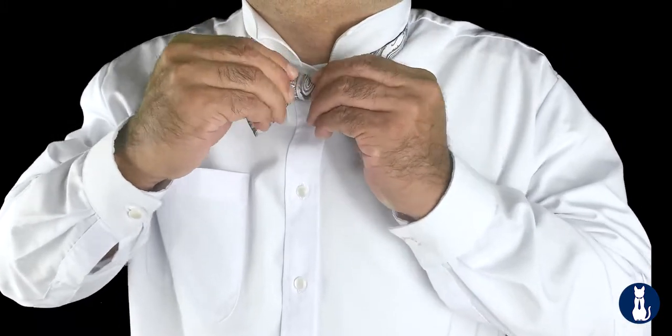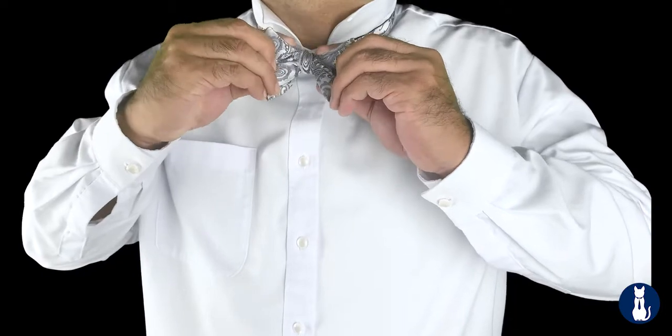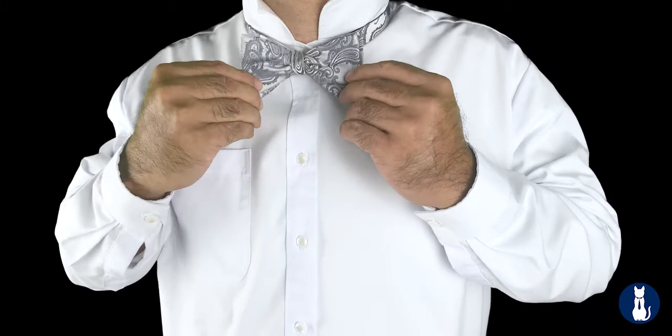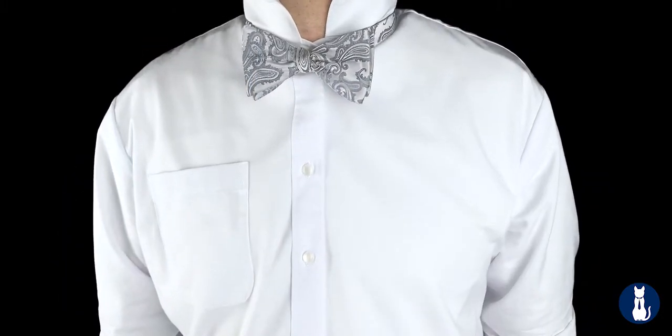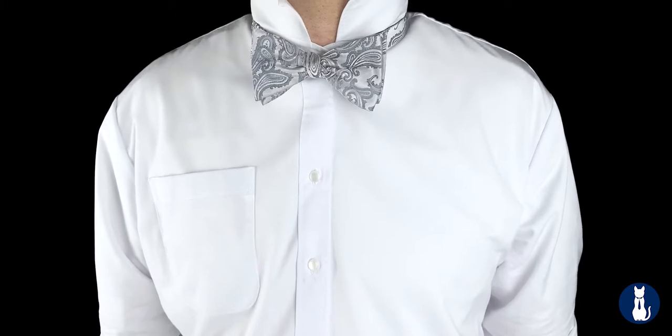Finally, fold each side of the bow forward while keeping the flaps and folds aligned. Make sure everything looks nice. At this point, you can now flip your collar down, do the final touches, and you're all done.